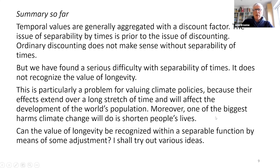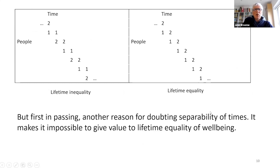Can we recognize the value of longevity within a separable function by some sort of fix? I'm going to go on to fixes we might try. There is also another important value which a separable function can't recognize: the value of equality between people's lifetime well-beings. Look at these two grids.